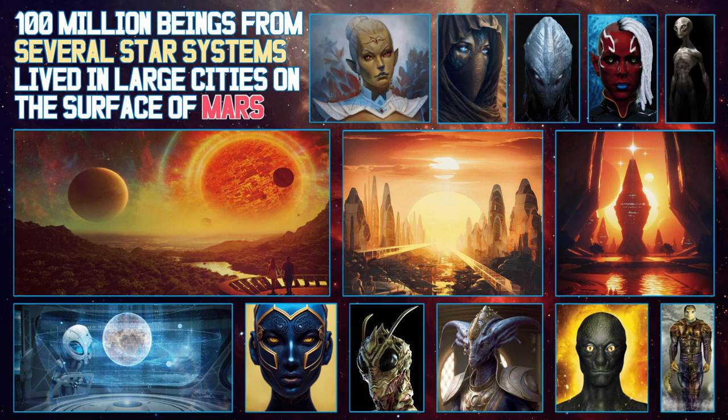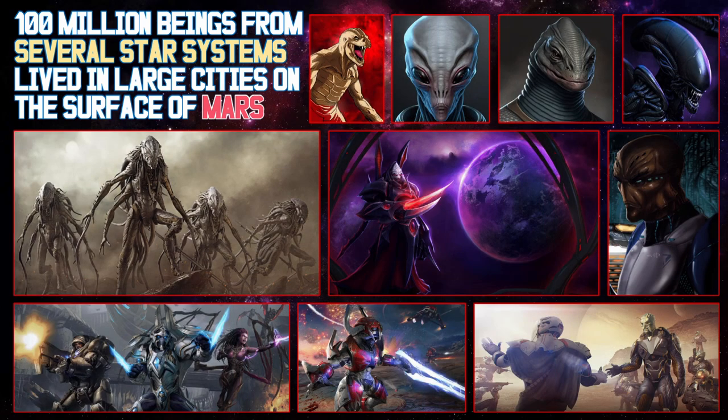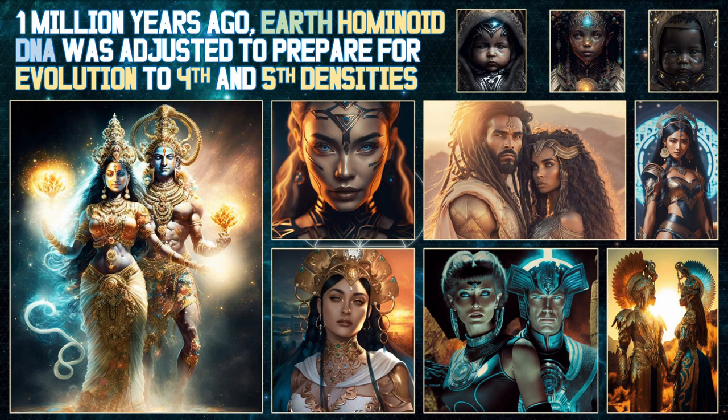A hundred million beings from several star systems lived in large cities on the surface of Mars. One point four million years ago, conflict escalated into atomic war, destroying the fragile ecosystem. Ten percent of the population survived by moving into underground cities. A million years ago, Earth hominoid DNA was adjusted to prepare for evolution to fourth and fifth densities.